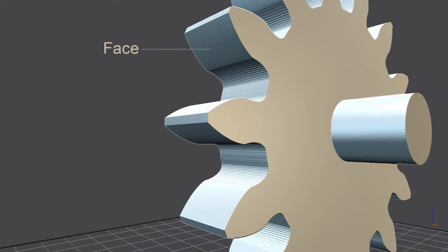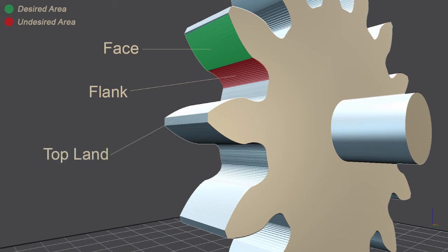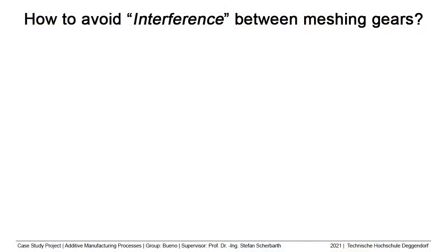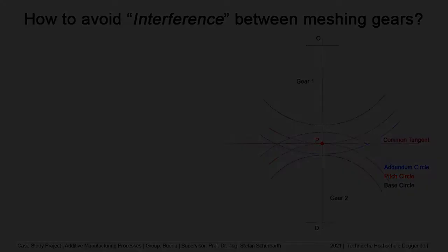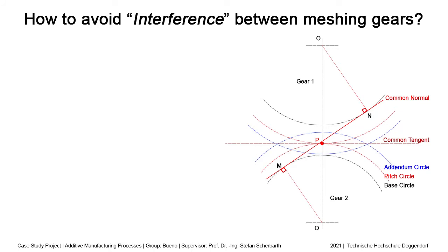Now I will leave you with some examples of desired and undesired areas animated on our designed gear. To understand how to avoid interference, we will imagine two gears apart from each other on their origin points. These two gears have the basic annotations of base circle, pitch circle, and addendum circle. A tangent line drawn on the intersection point between two pitch circles at the pitch point is called the common tangent.